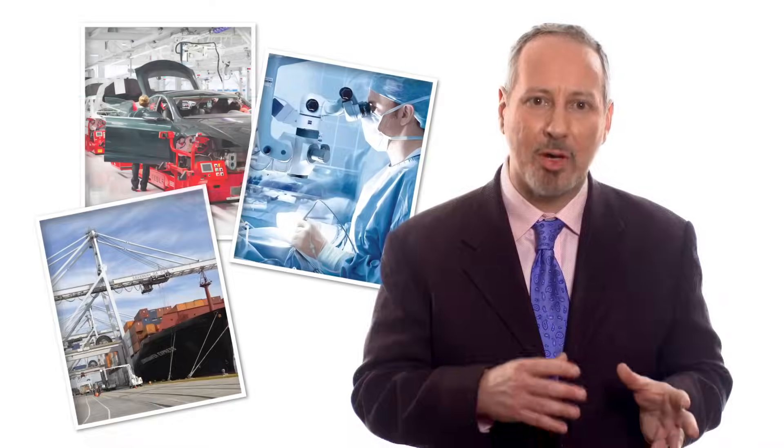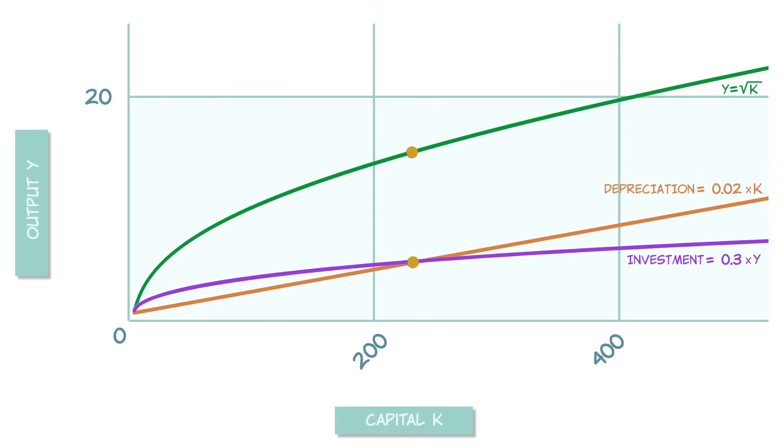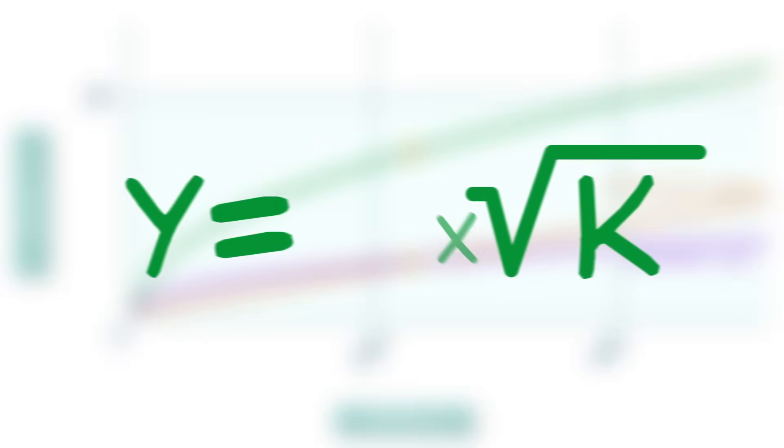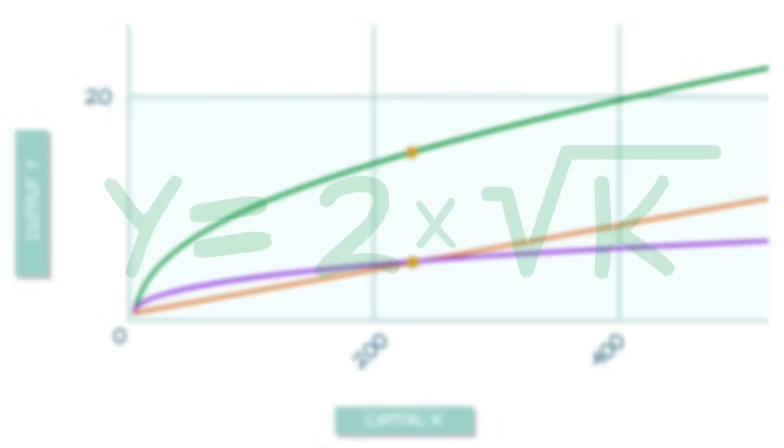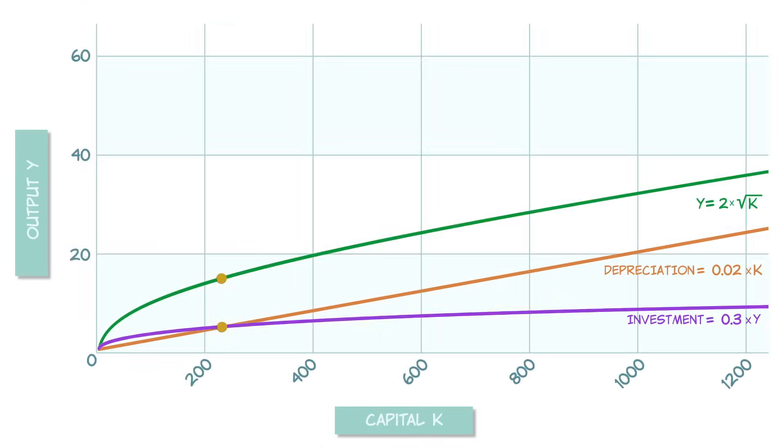So let's go back to our previous graph of capital and output. We can now add ideas as a multiplier. Better ideas multiply the output from the same capital stock. So if A increases from 1 to 2, that's a doubling of our productivity, and that shifts the output curve up.